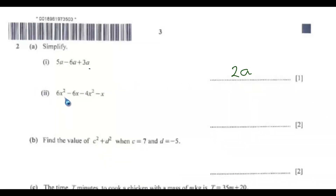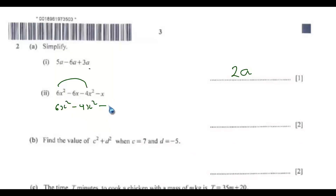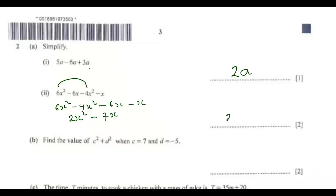Part two: Simplify 6x² minus 6x minus 4x² minus x. Combine the x² terms: 6x² minus 4x² gives 2x². Then combine the x terms: minus 6x minus x gives minus 7x. So the answer is 2x² minus 7x.